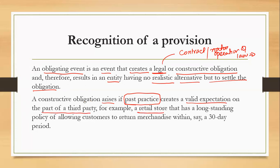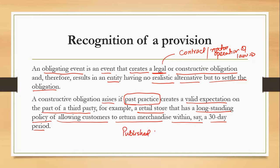For example, a retail store with a long-standing policy of allowing customers to return merchandise within a 30-day period — although it is not written in a contract, past practice creates a valid expectation that the entity will give refunds. That is a constructive obligation. So the sources of constructive obligation include past practices, published policies, and statements or word of mouth. Remember, this is not a legal obligation.